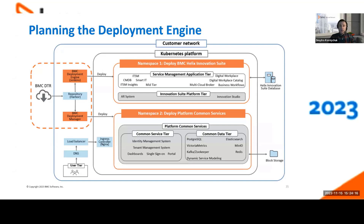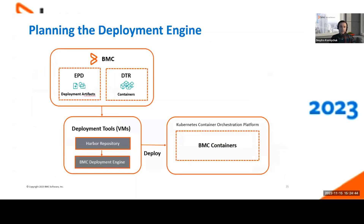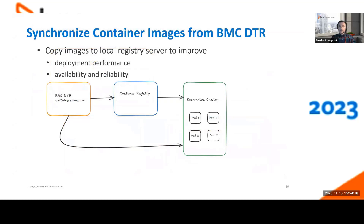To sync your images to your local registry, you need to set up the deployment engine in your ITSM environment. This should be a dedicated VM and consists of components like Jenkins, Ansible, Git, kubectl, Helm, etc. We highly suggest that you copy your images from bmccontainers.com (DTR) to your local registry to address performance, availability, and reliability. Please use this approach rather than copying directly from BMC DTR.